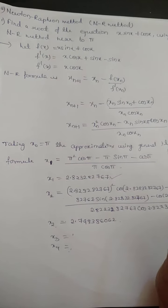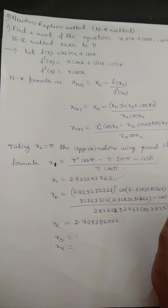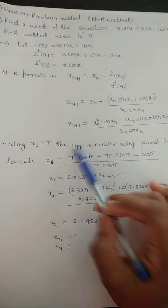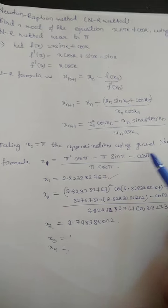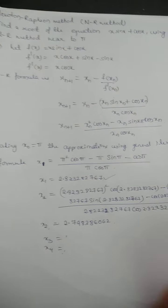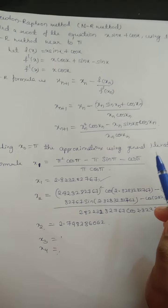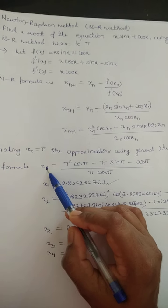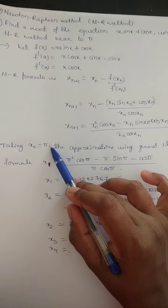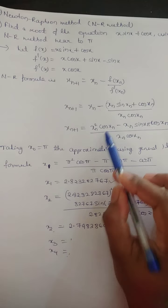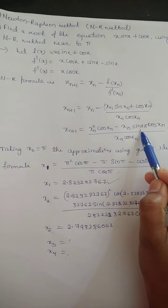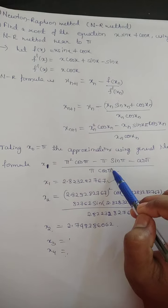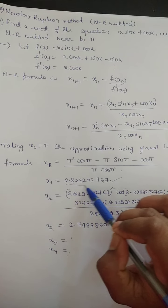Now taking x_0 = π, it is given near to π. So we will get the first approximation value using the general iteration formula. First approximation is given by x_1. Wherever x_n is there, we have to substitute π. See, π² cos π minus π sin π minus cos π, divided by π cos π. So when you simplify this, we will get this value.